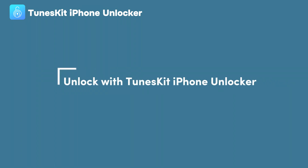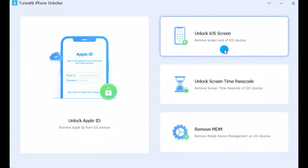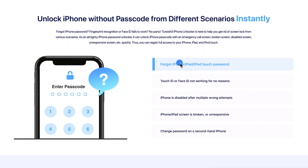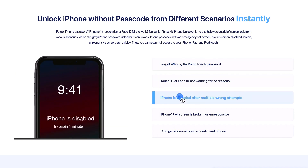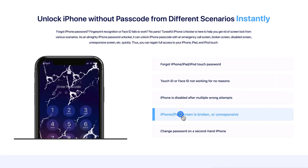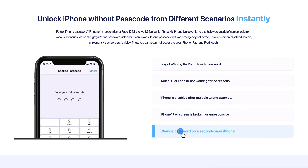Method 2: Unlock with TunesKit iPhone Unlocker. TunesKit iPhone Unlocker is a professional unlocking tool that helps users unlock iPhones without a password. When you encounter cases like forgetting your password or Face ID not working, it can help you.